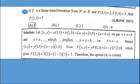from R² to R, and F(1,1) = 2, F(1,0) = 3, then F(2,3) = ? So first of all, let's suppose (x,y) equals